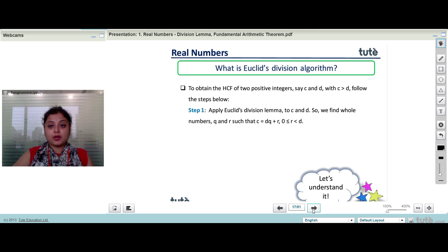Step 1: Apply Euclid division lemma to C and D, so we find the whole numbers Q and R such that C equals 2DQ plus R, where R is greater than or equal to 0 and less than D.